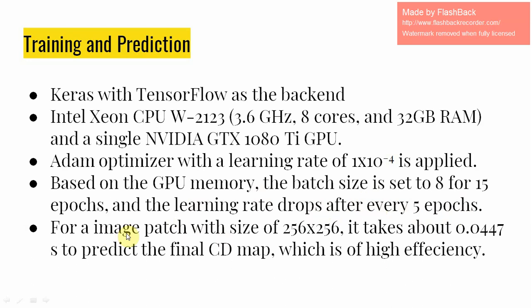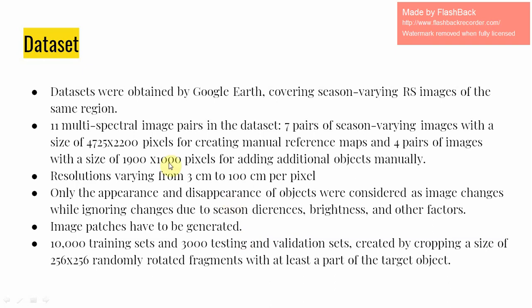For an image patch of size 256×256, it takes around 0.04 seconds to predict the final change detection map. A publicly available dataset of satellite image pairs was obtained from Google Earth, covering season-varying remote sensing images of the same region. The dataset contained 11 multi-spectral image pairs, including 7 pairs of season-varying images of size 4725×2200 pixels for creating manual reference maps, and 4 pairs of images of size 1900×1000 pixels for adding additional objects manually. The dataset consisted of multi-source remote sensed imagery with resolution varying from 3 cm to 100 cm per pixel, where seasonal changes between bi-temporal images varied largely.